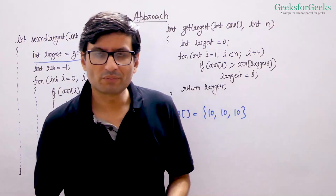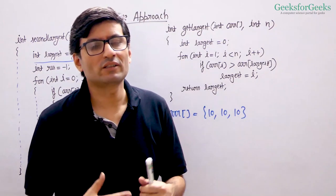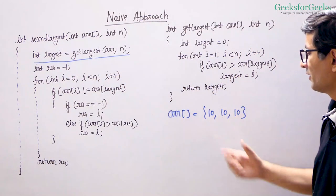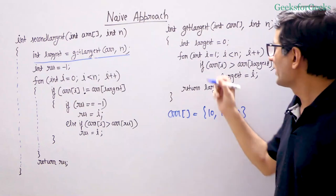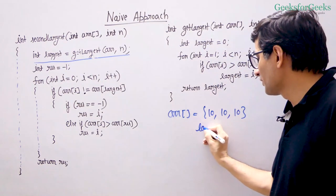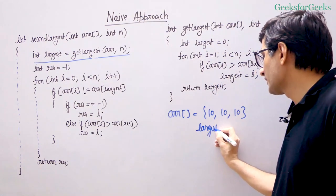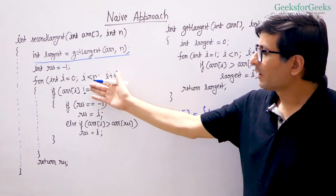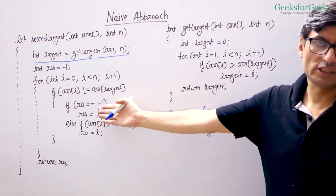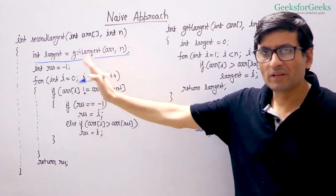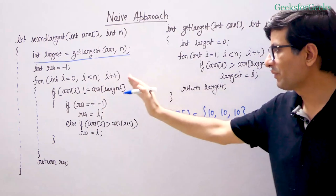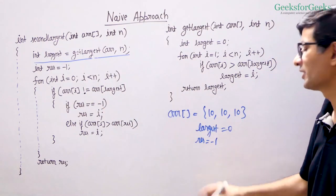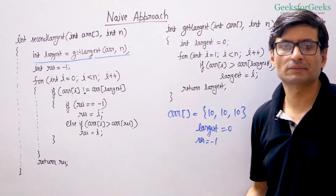Let us take one more example to understand the naive approach better. Say we have array elements 10, 10, 10. We get the largest as index 0. Now we run the second loop and we never go inside the if condition — our result remains minus 1. So we return minus 1, which is the correct answer for this example.